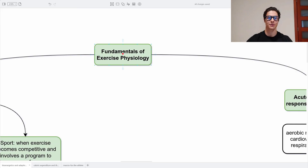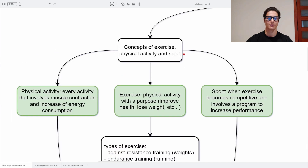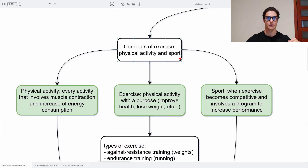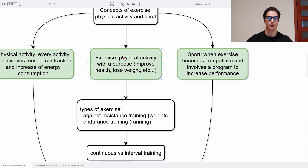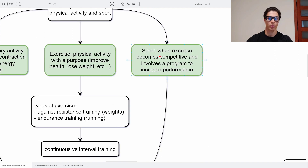Now let's look at the fundamentals of exercise physiology. Physical activity, exercise, and sport are similar but not the same. Physical activity is every activity that involves muscle contraction and increases energy consumption — for example, walking to university. Exercise is physical activity with a purpose, such as to improve health or lose weight — for example, going to the gym. Sport is when exercise becomes competitive and involves a program to increase performance, with a component of competition.